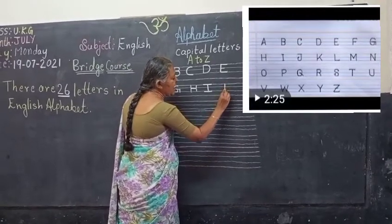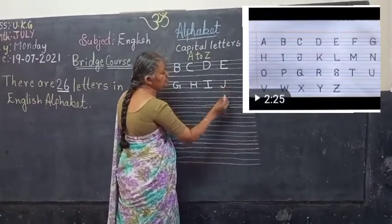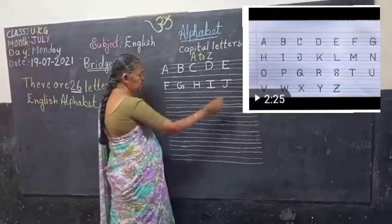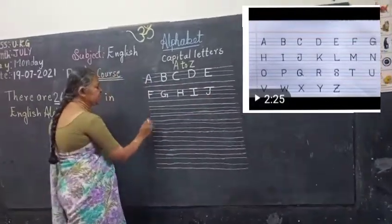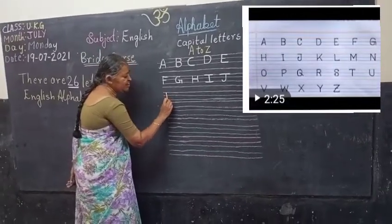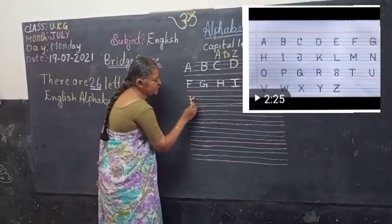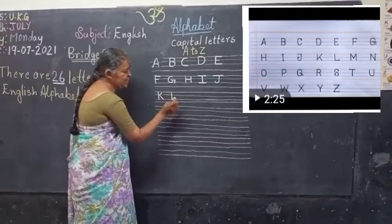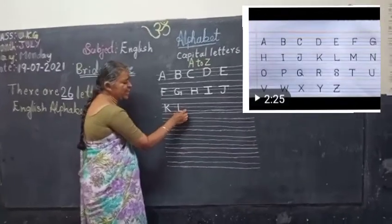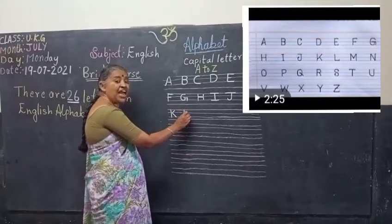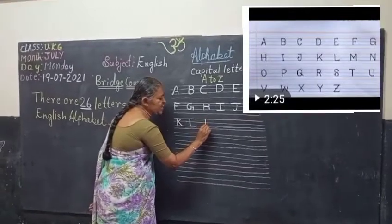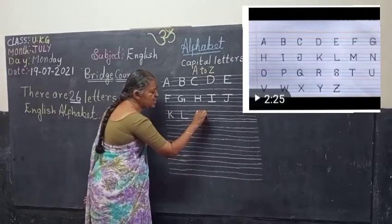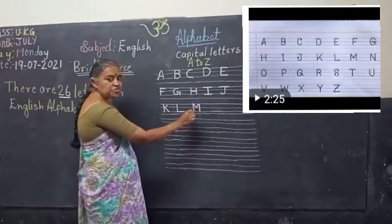Strike line, strike line and you have to curve, then write the sleeping line — that is J. Come to the next: strike line and two sliding lines — that is K. Strike line and sleeping line — that is L.